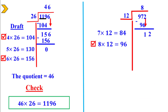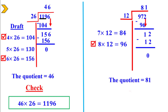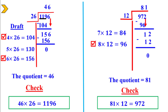Now 12 divided by 12 equals 1 directly. 1 times 12 equals 12. Write a line and subtract — it will be 0. The quotient is 81. To check: 81 times 12 equals 972, which is the dividend.